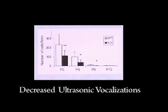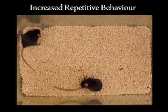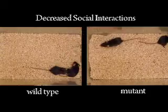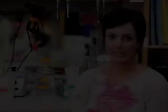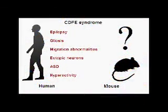They showed decreased ultrasonic vocalizations as a measurement of vocal communication. They showed increased repetitive behavior such as grooming, and they also showed deficits in social interactions. In addition to the autism core behaviors, the mice also showed hyperactivity, which was also reported in patients, and sensory abnormalities, which is very common in autistic patients.